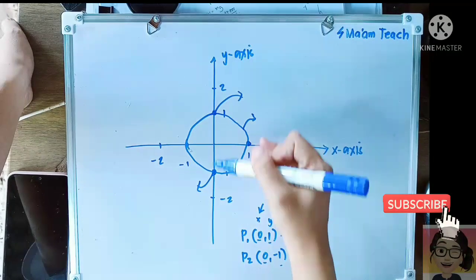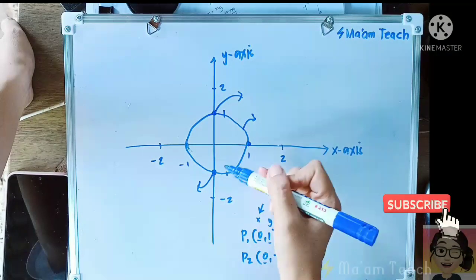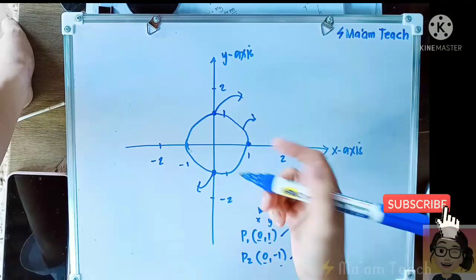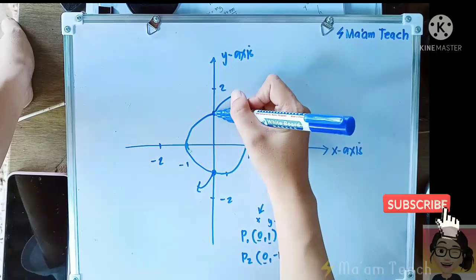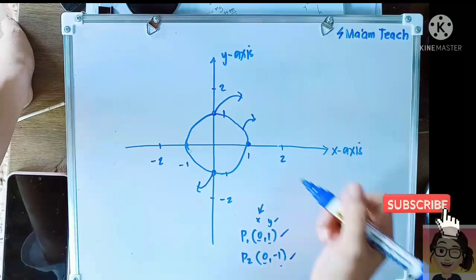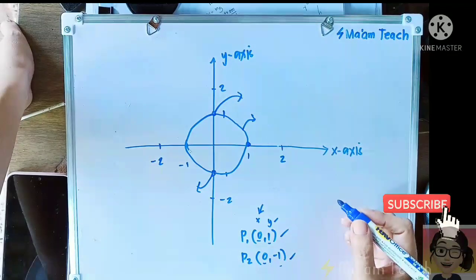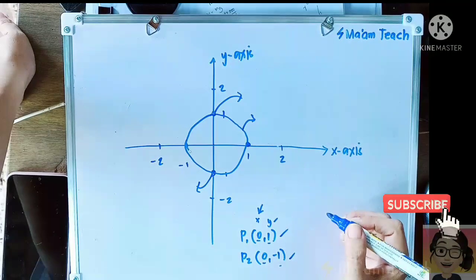As you can observe, it intersects more than once because it intersects twice, this one and this one. So we cannot consider it as a function.